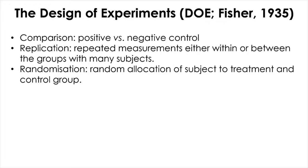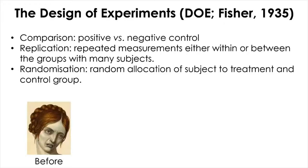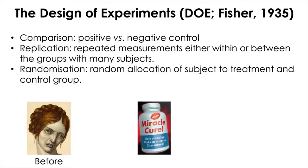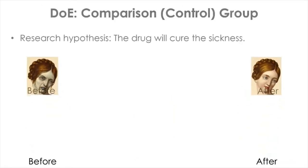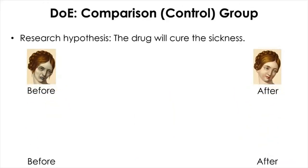To illustrate why those components are needed, let's take a hypothetical study where you want to test the efficacy of a drug to cure or treat a disease. You develop a drug called miracle cure and give it to a patient suffering from an unknown disease. After taking the drug, the patient seems to get better. The question is then: how do we know if the recovery is because of the drug and not something else?